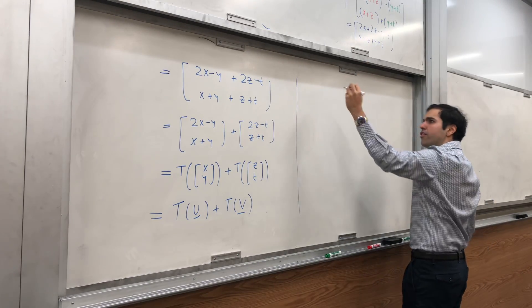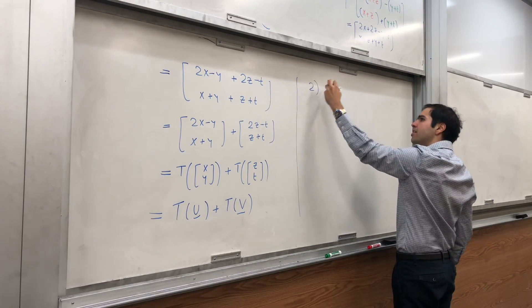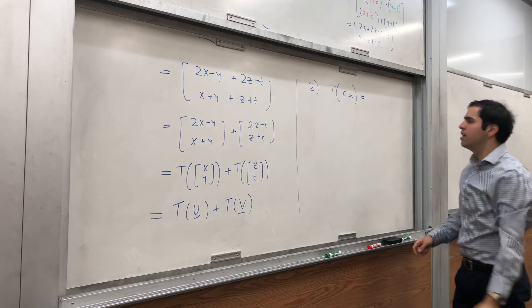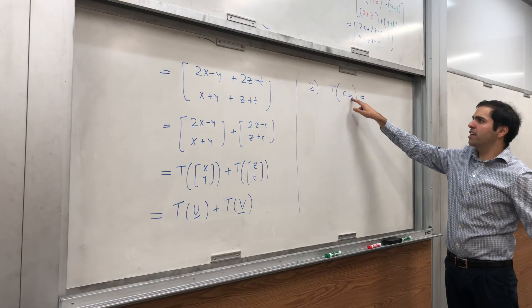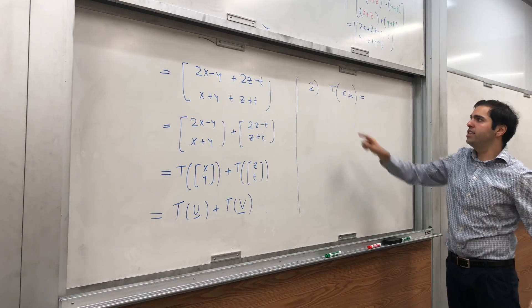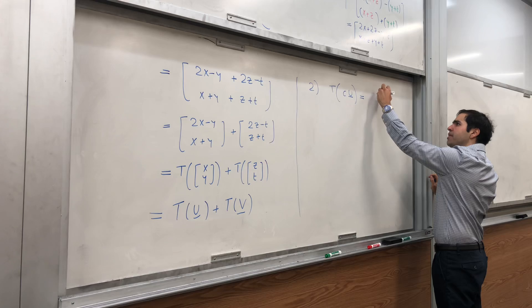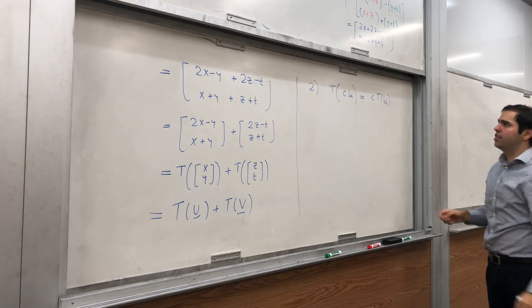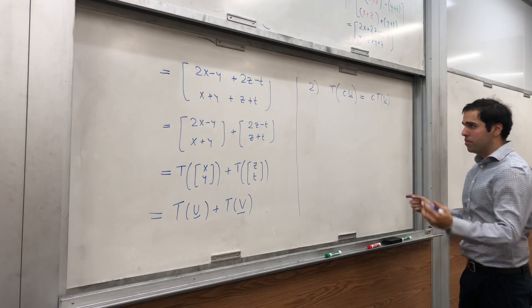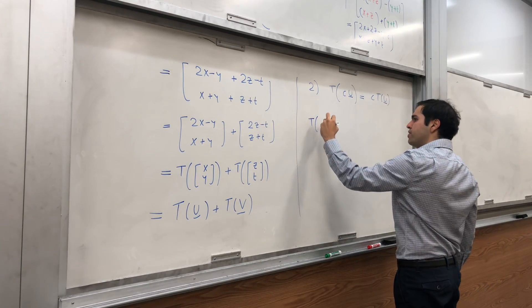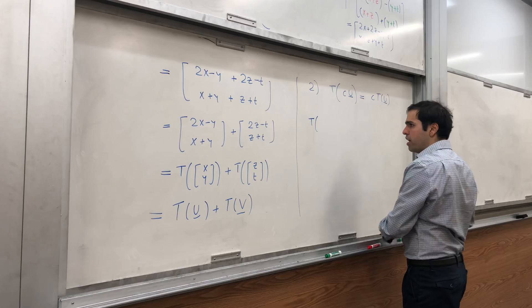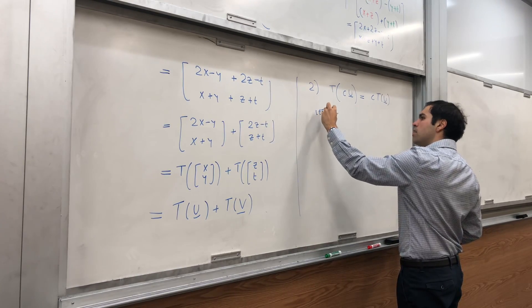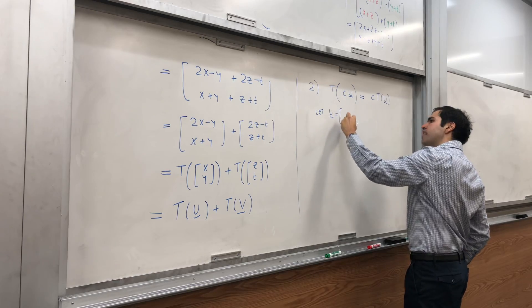Now let's do the other case, which is actually easier. The second requirement of a linear transformation is simply, if you multiply a vector u by a number and you apply T to it, that should be the same thing as first doing T(u) and then multiplying it by the number. So let's see. T(cu), again, sorry, before that, again, u is a vector, so let u have components x and y.